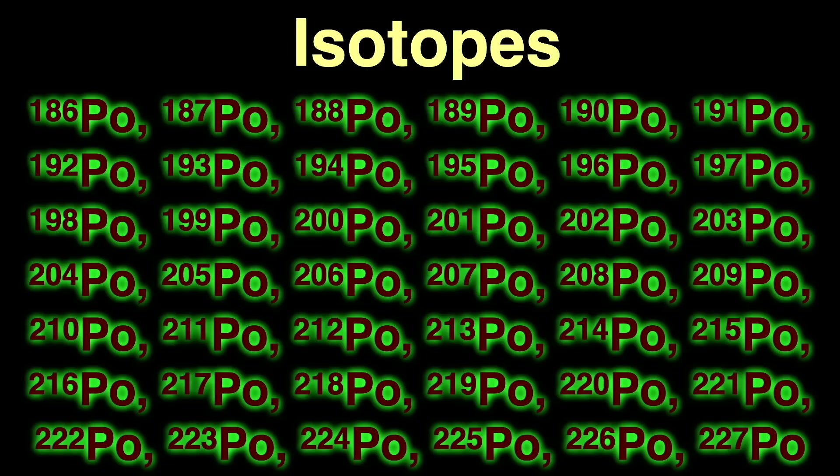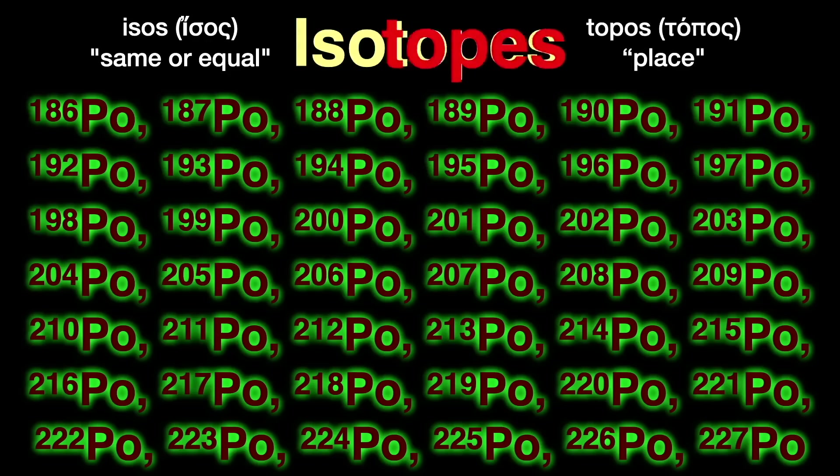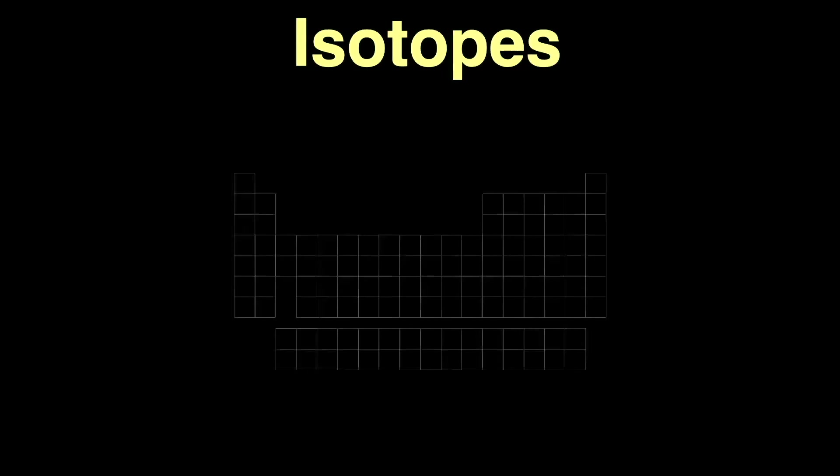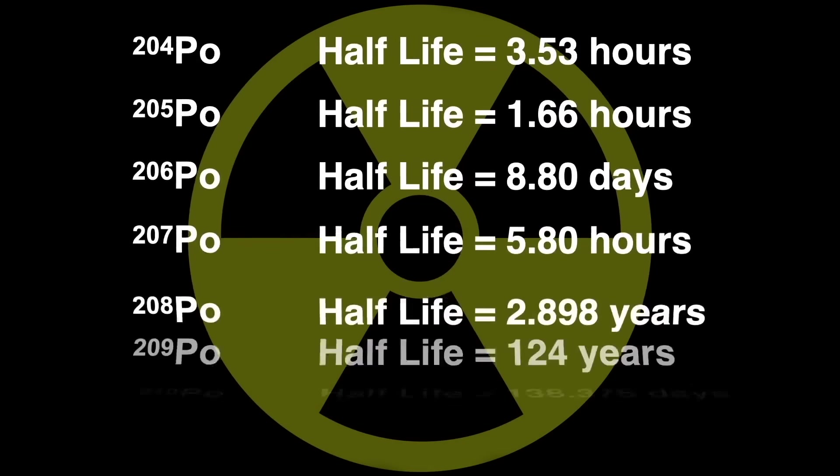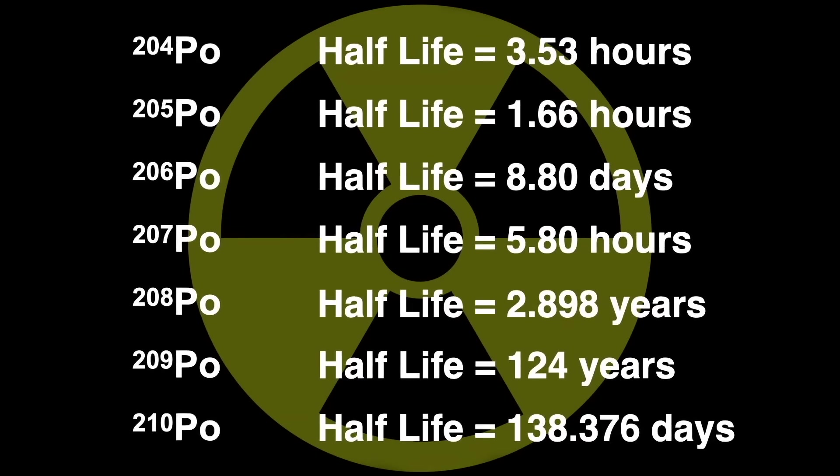The word isotope comes from the Greek, isos, meaning same or equal, and topos, meaning place, since all these various forms of polonium occupy the same place in the periodic table. Of the isotopes of polonium, these are the longest lived, the ones with half-lives over one hour. More on half-life in the next slide.